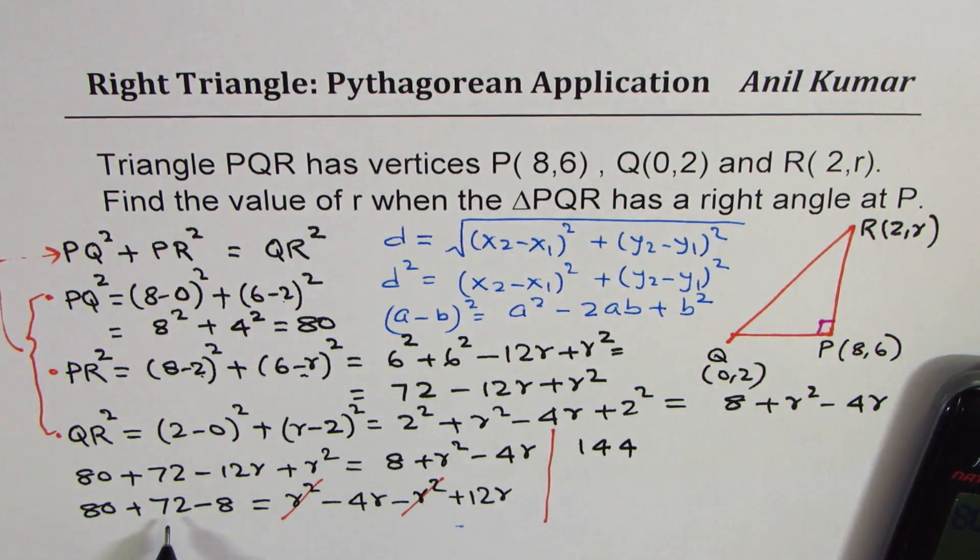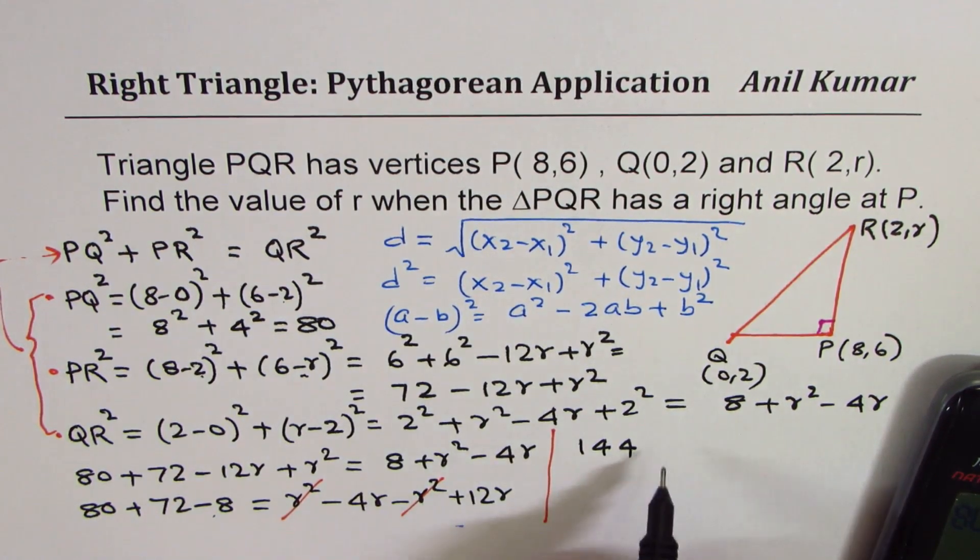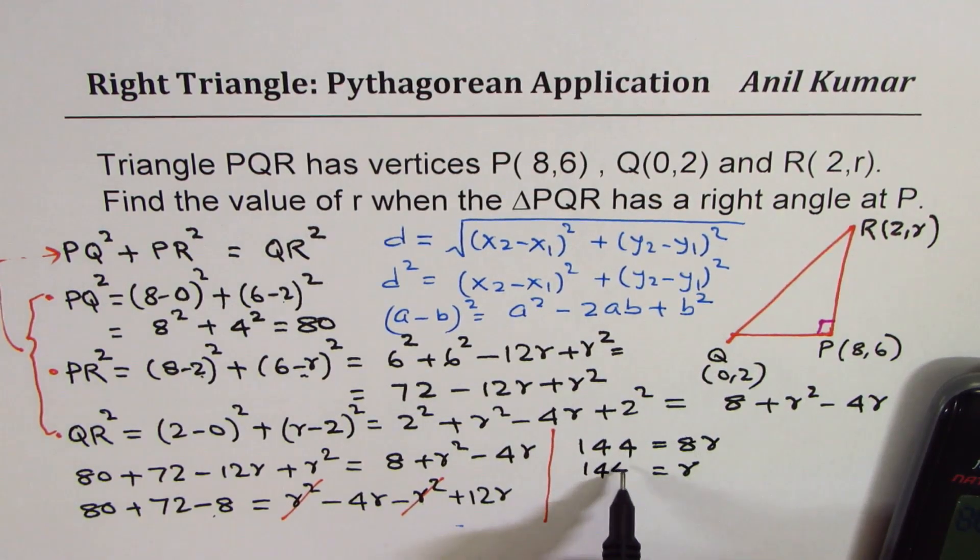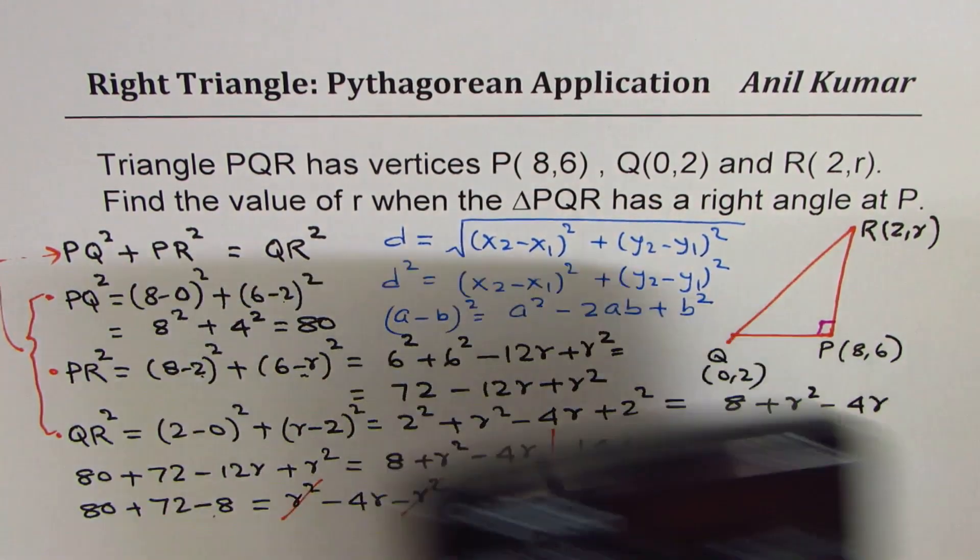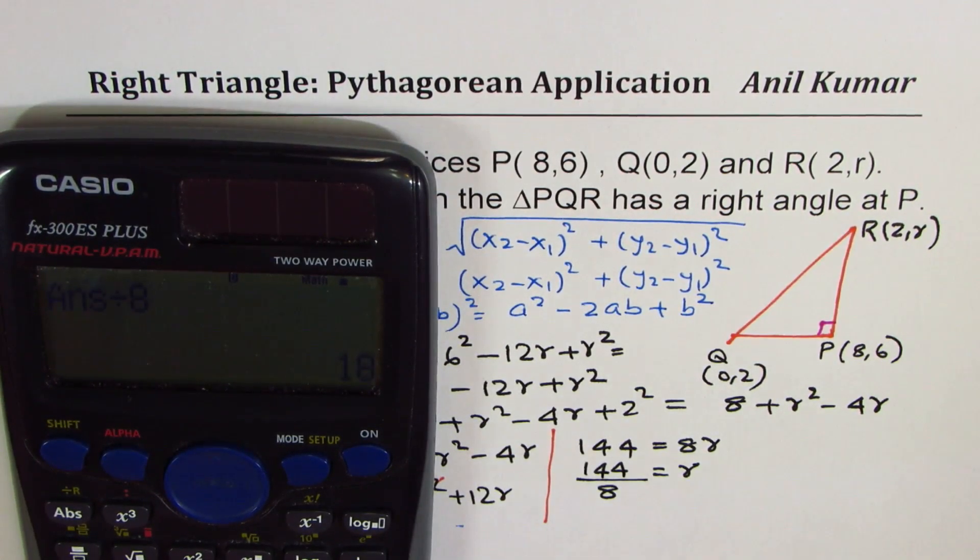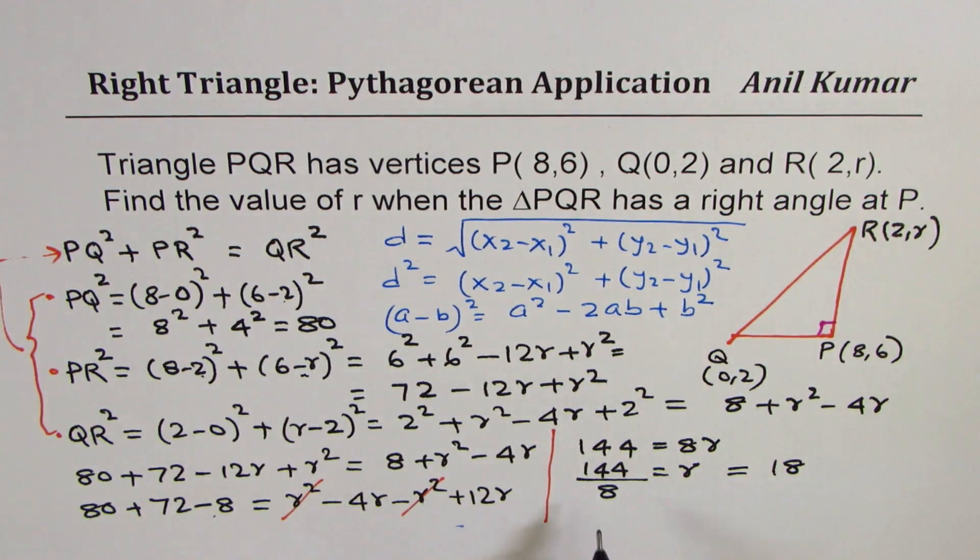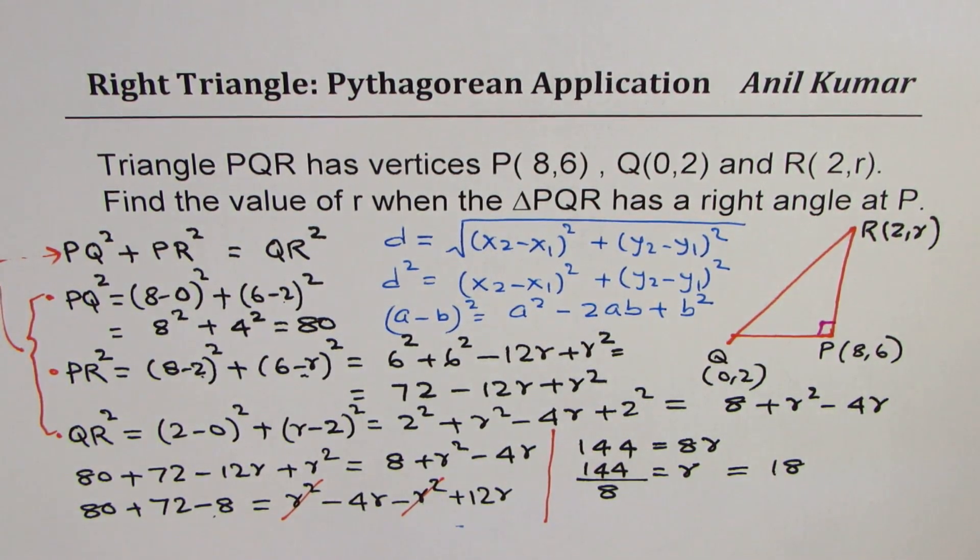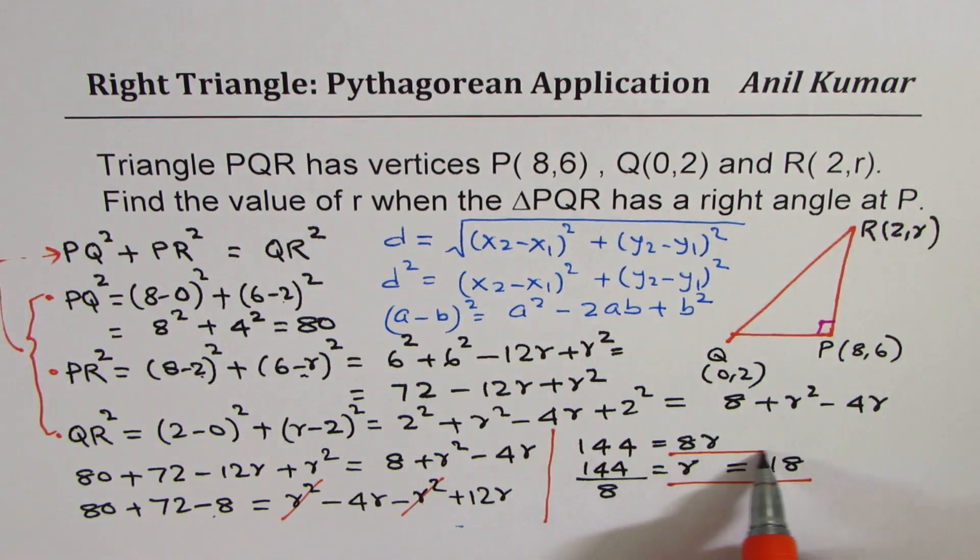80 + 72 - 8 is equal to minus 4 plus 12, which is 8r. So that gives you the value of r as 144 divided by 8. So I'm going to divide this by 8 to get the answer. So that gives us the value of r as 18. So r is 18 for us. So that is how we could actually solve this particular equation. So I hope the concept is clear. So r is 18.